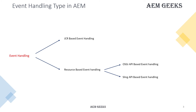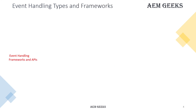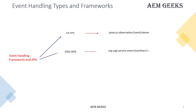These two can listen for different events. Now let's understand the frameworks and APIs available. One is JCR-based API, where you use the observation manager and event listener to listen for events. Another one is OSGI-related API, where you use an event handler to listen for those events. Another one is Sling-based API, which is where you use a resource change listener.